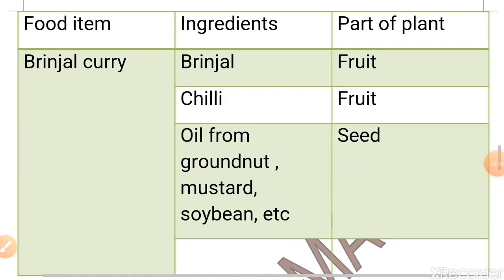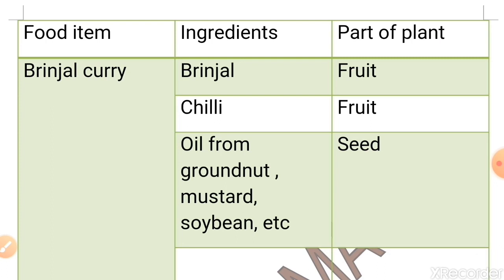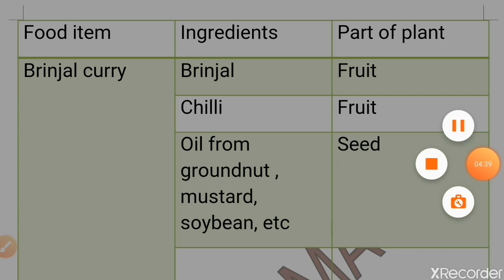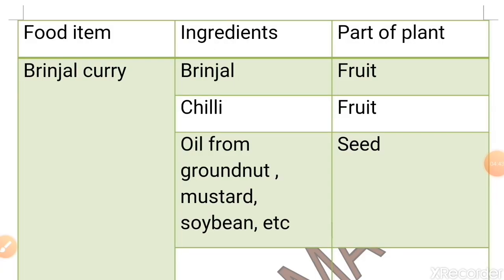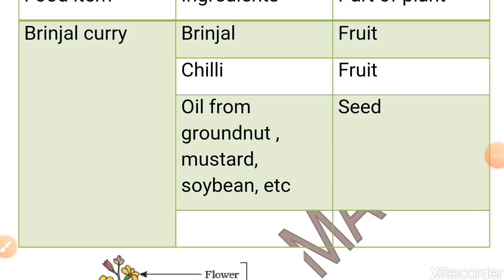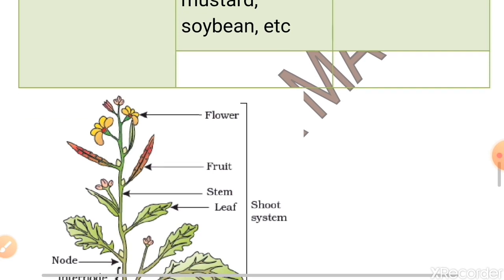Now students, we will see this table. Here I have mentioned food items, ingredients and the part of plant from which we get these things. The example is brinjal curry. To make brinjal curry, we need brinjal, chilies, spices and oil as ingredients. Brinjal is the fruit of its plant. Chilies are also fruits of their plant. Oil — we get oil from groundnut, mustard or soya bean. These are all seeds of their plants, and we get oil from the seeds. Whether it's groundnut oil, mustard oil or soya bean oil, they are all obtained from the seeds of their plants.